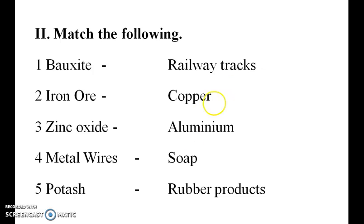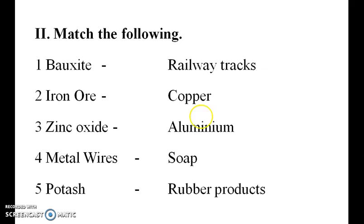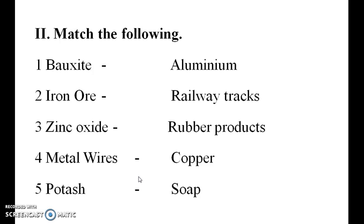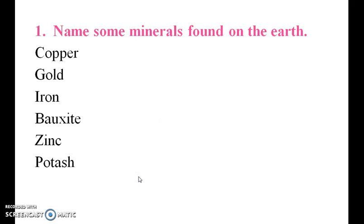The matched answers are: aluminium from bauxite, iron ore for railway tracks, zinc oxide for rubber products, and copper and potash for their respective uses. Name some minerals found on earth: copper, gold, iron, bauxite, zinc, and potash.